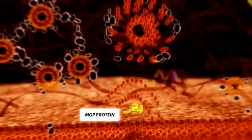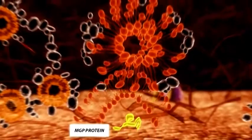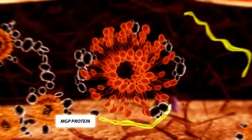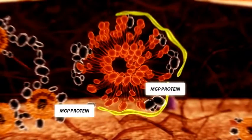The MGP activated by MeniQ7 will be secreted by the vascular smooth muscle cells and released into the extracellular matrix. Here, it will find and bind the calcium crystal structures.